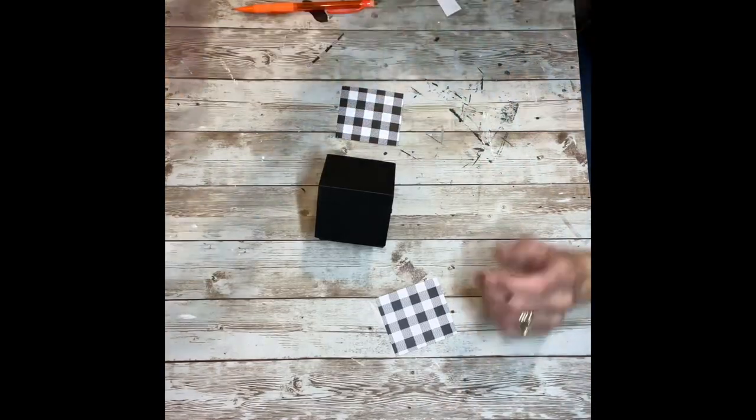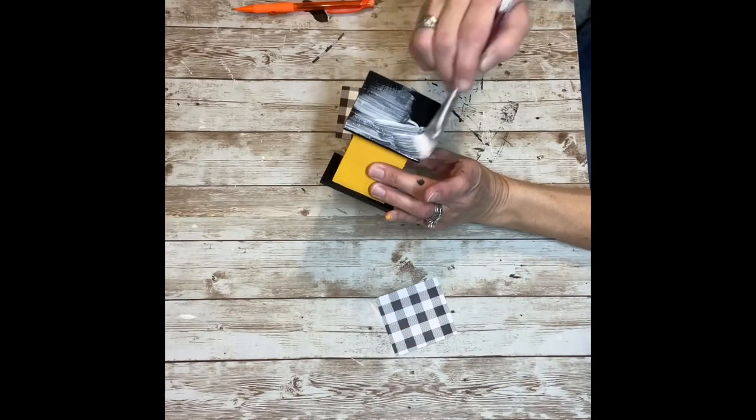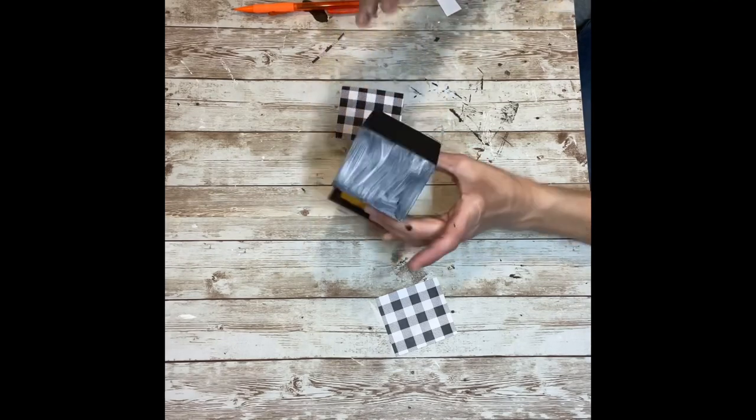Once I have both of those cut out, I'm going to take my Mod Podge and Mod Podge each one to each side of the roof. Then I'm going to use some sandpaper to sand off the excess if there is any.